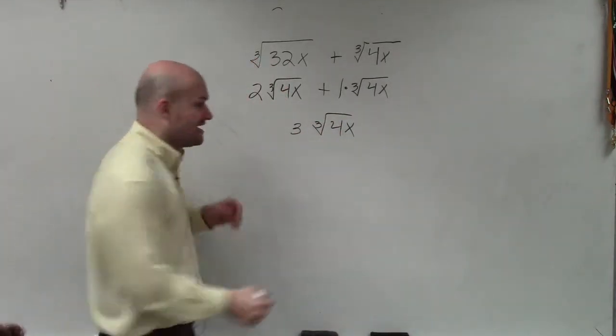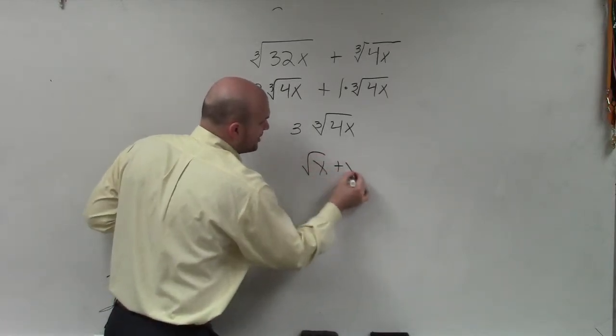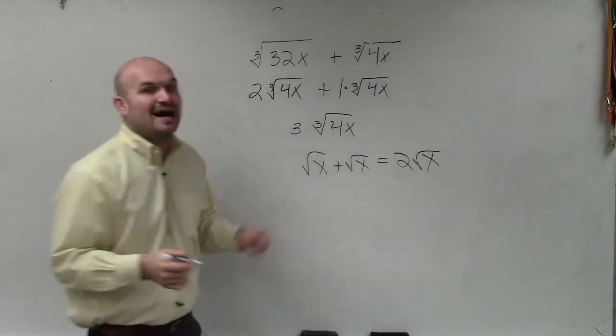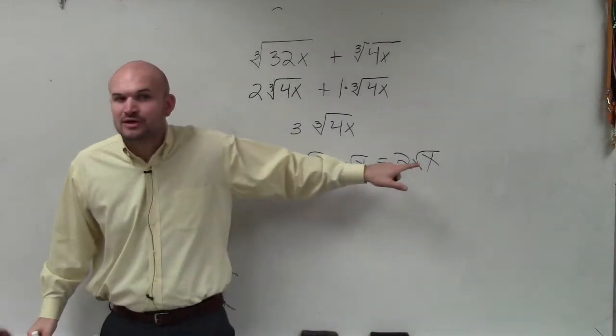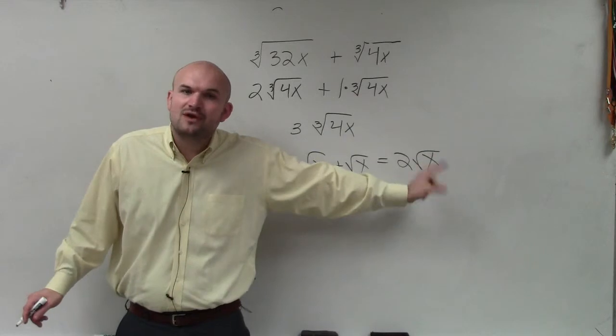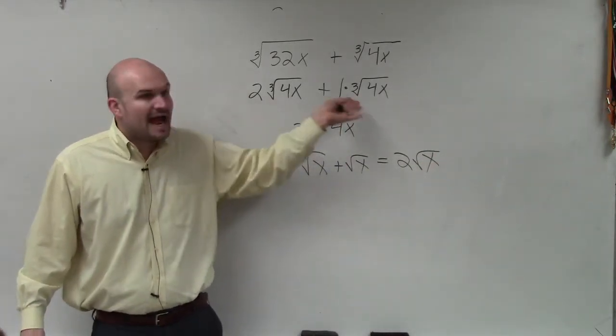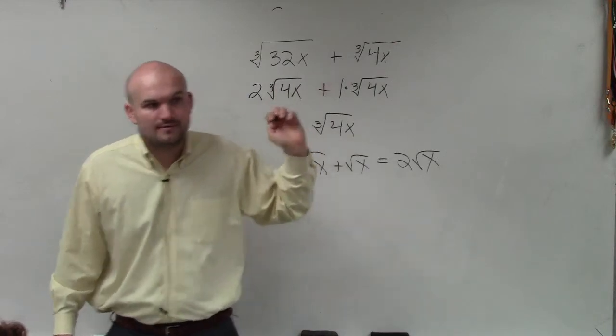If you guys remember, on the rules of exponents, I said the square root of x plus the square root of x is equal to 2 square root of x. I did not say it's equal to the square root of 2x. You're adding them, and you keep the same radicand. So this one, the radicand remains the same, but now you're going to add those coefficients of the radicand. OK?